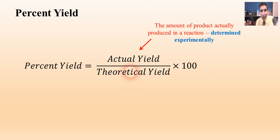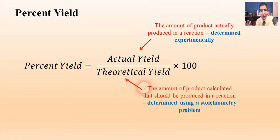Now the theoretical yield, this is the amount of product that we calculate that should be produced in a reaction. And it's determined using a stoichiometry problem. All of the problems that you saw me work in the last couple of videos, we were calculating theoretical yields. On paper and pencil, you can calculate how much you should make. That's theoretical.